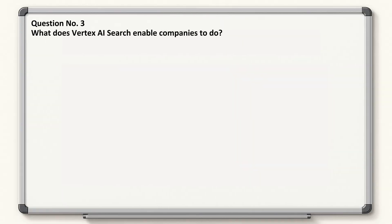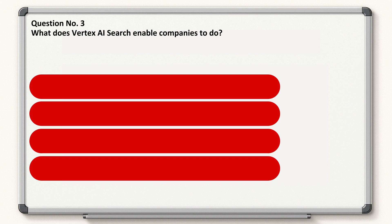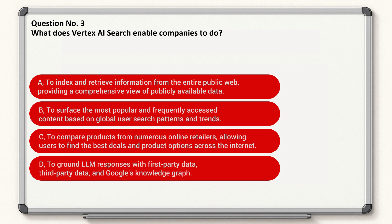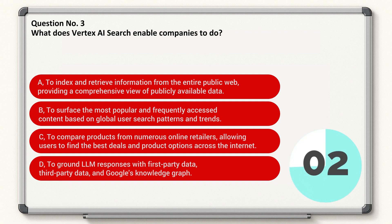Question number three: what does Vertex AI Search enable companies to do? Correct answer is D.